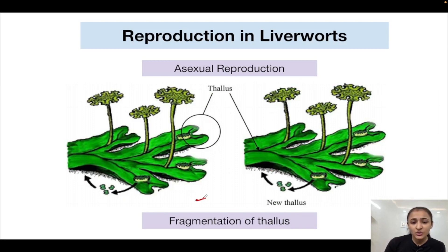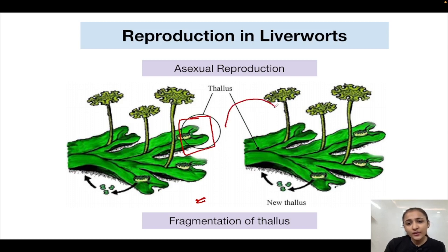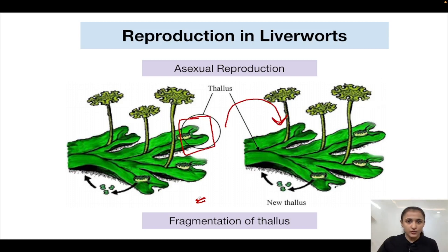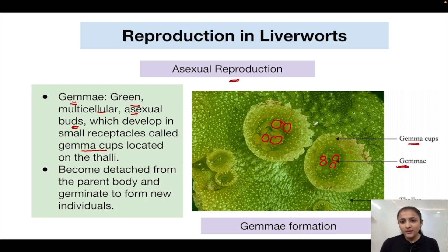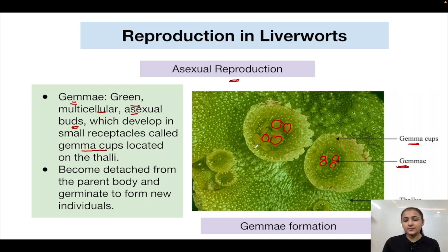Fragmentation is another method of asexual reproduction: a part of the thallus breaks off and is capable of giving rise to a completely new thallus when it attaches to a substratum. The new plant body is genetically identical to the parent because asexual reproduction produces genetically identical offspring.